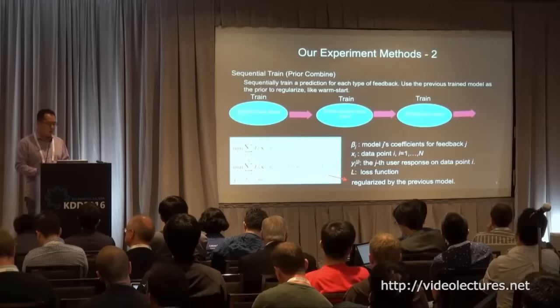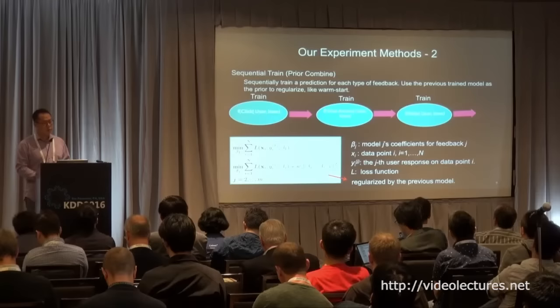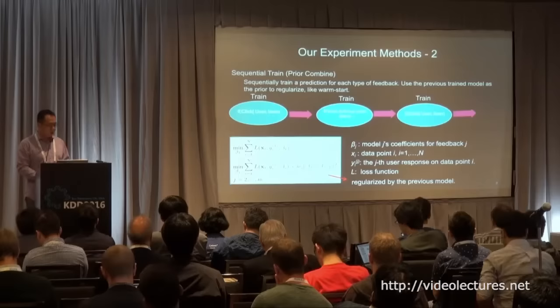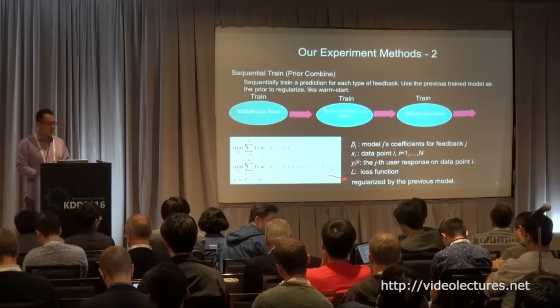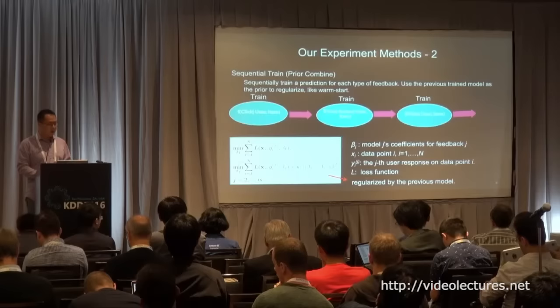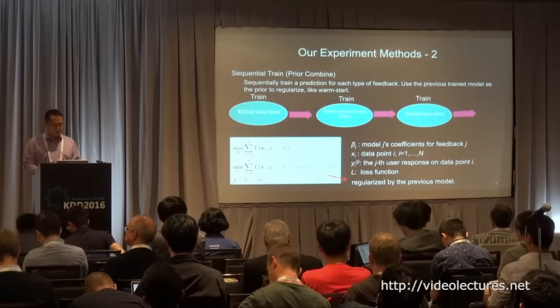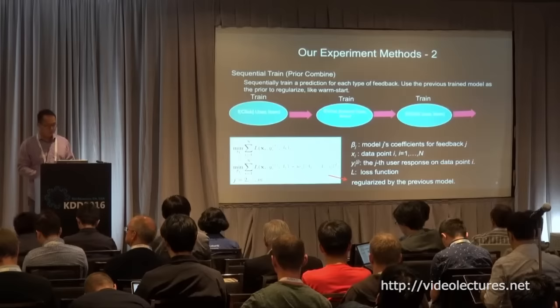The second method is sequential training — like a warm start. The intuition is that we first train the click model and get its coefficients beta. Then we bring those coefficients into the next training and use beta as a prior to regularize the next step. Sequentially, we use previous training results to regularize the next step, so the final model will contain the signal from all the data.